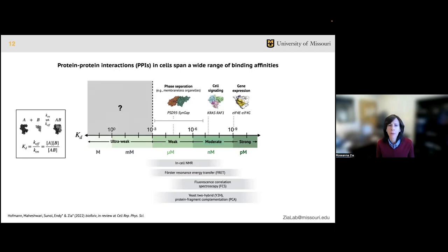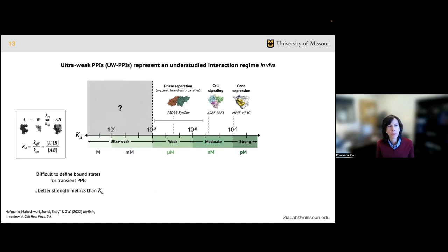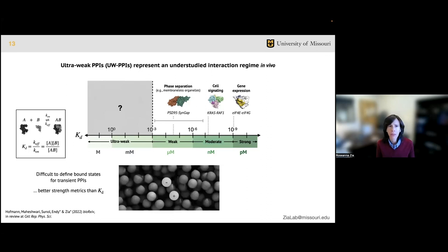These observations suggest that even weaker PPIs might contribute to cell function, but limited in vivo resolution has largely prevented study of PPIs with millimolar binding affinities. We wanted to interrogate this gray zone with a question mark. In this ultra-weak regime, clearly defining bound states as needed to calculate KD can be challenging. Instead, interaction strength can be better understood in terms of its mechanistic origin - a competition between deterministic attractions that pull proteins together and underlying thermal fluctuations driving Brownian motion that tend to separate particle pairs.